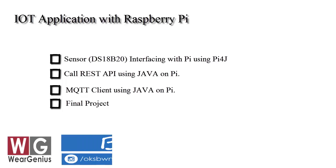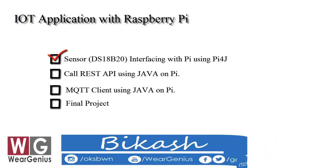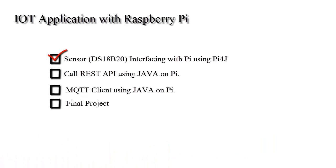In the last video, we saw how to interface the DS18B20 OneWire Temperature Sensor with Raspberry Pi using Java. If you have not checked that, you can certainly check it out by clicking the link down below in the description. This video is the second in the series. We'll see how to publish or send sensor data using REST API to the cloud, and in this we are using ThingSpeak as the cloud service provider to publish our data.